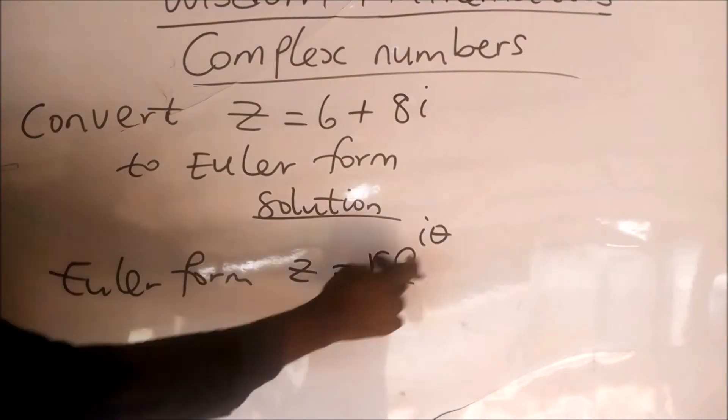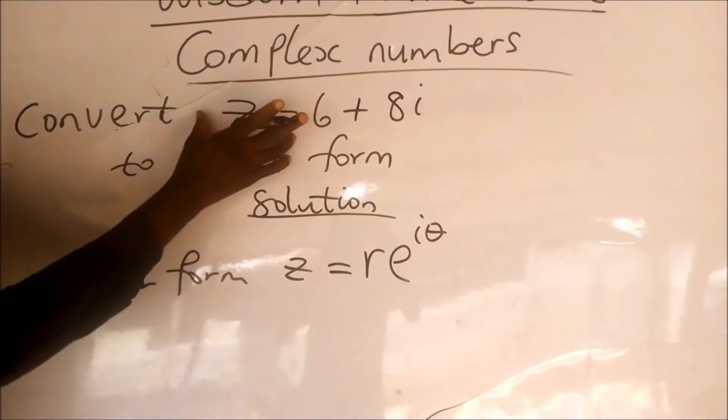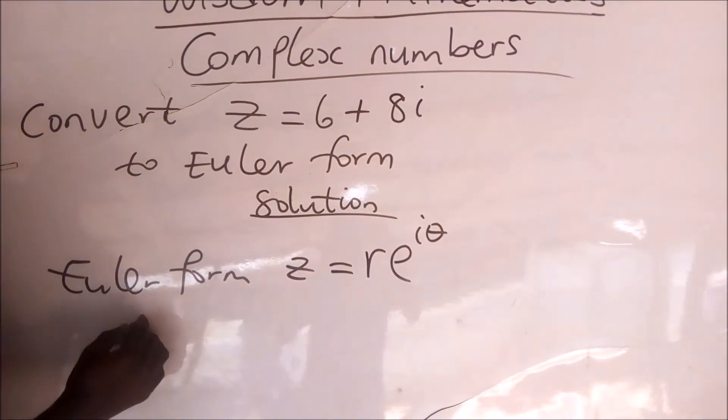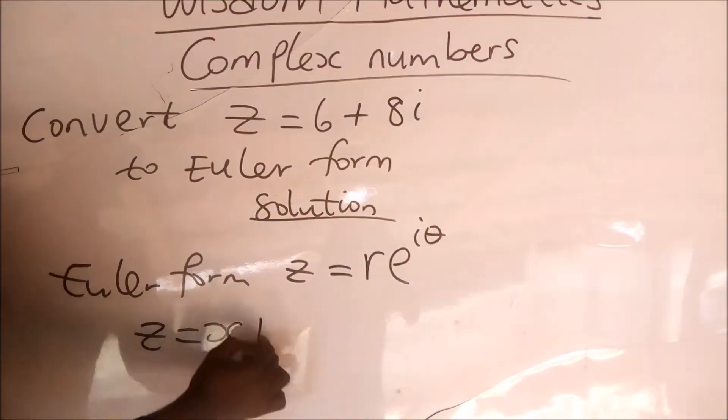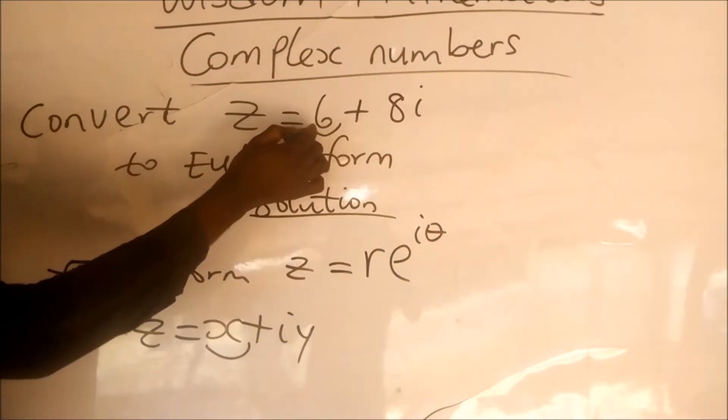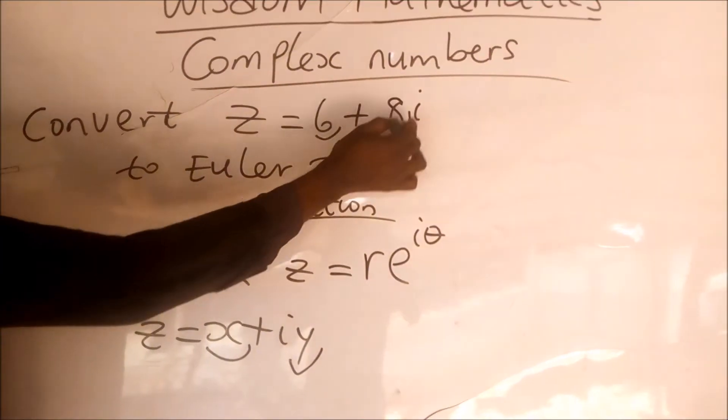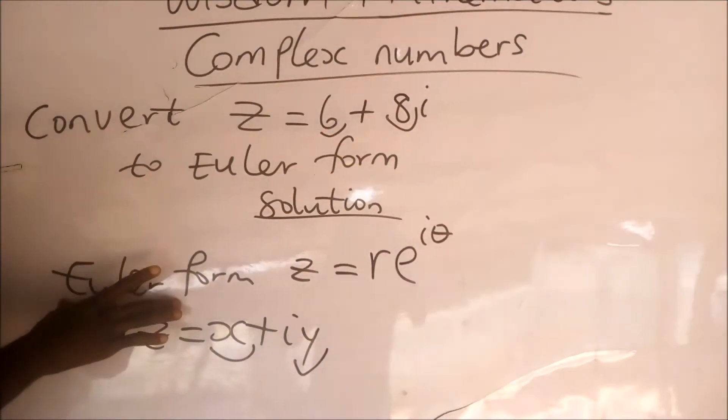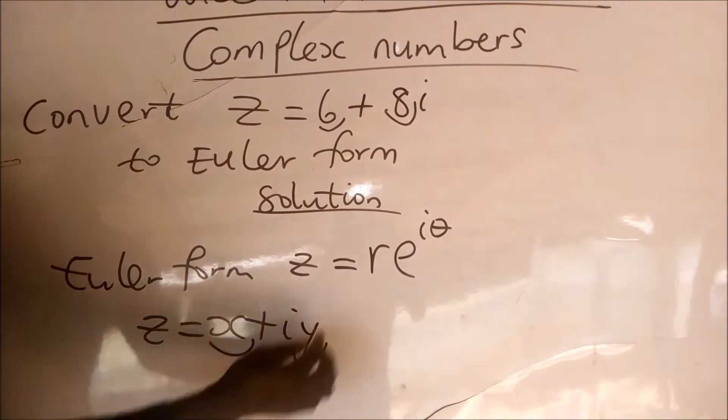Now this particular complex number is already in the general form, which is z equal to x plus i y, so this x is the real part and this y is the imaginary part. For us to get this Euler form, we are going to find the values of r and the value of theta.